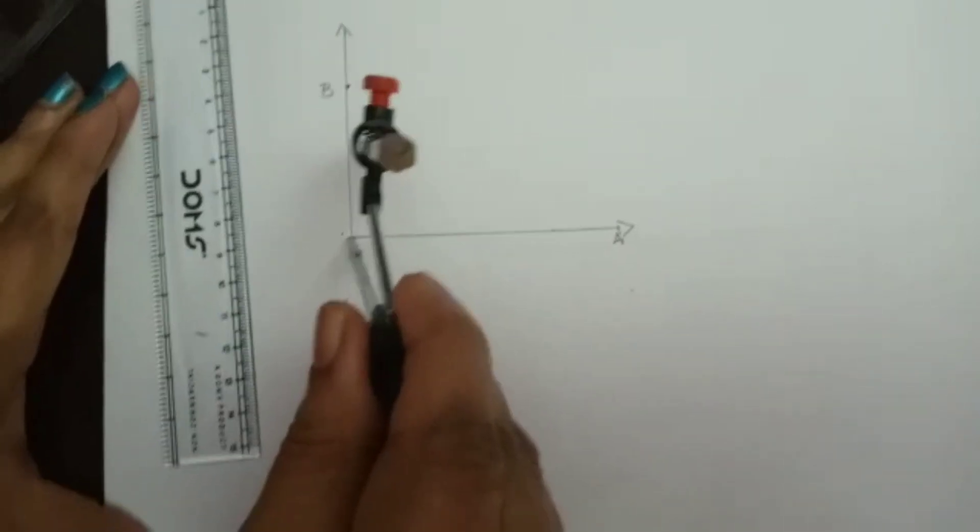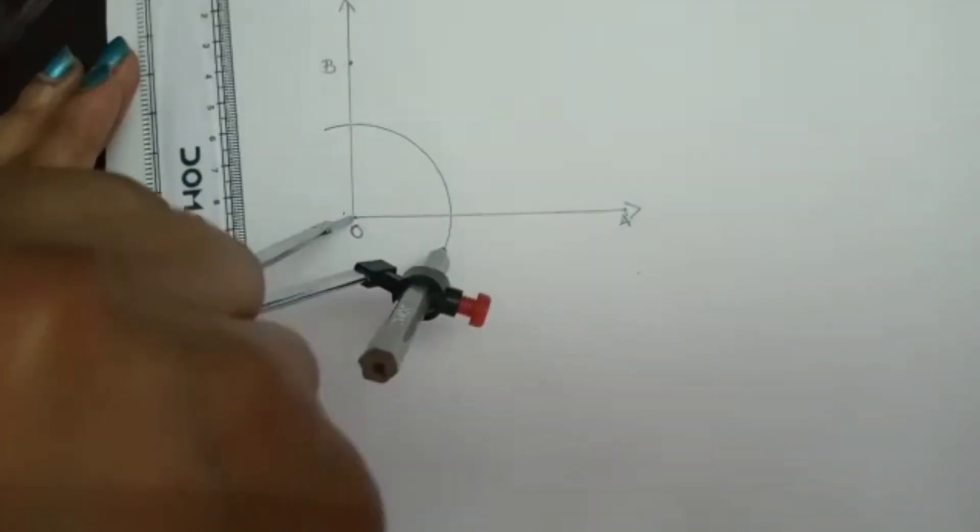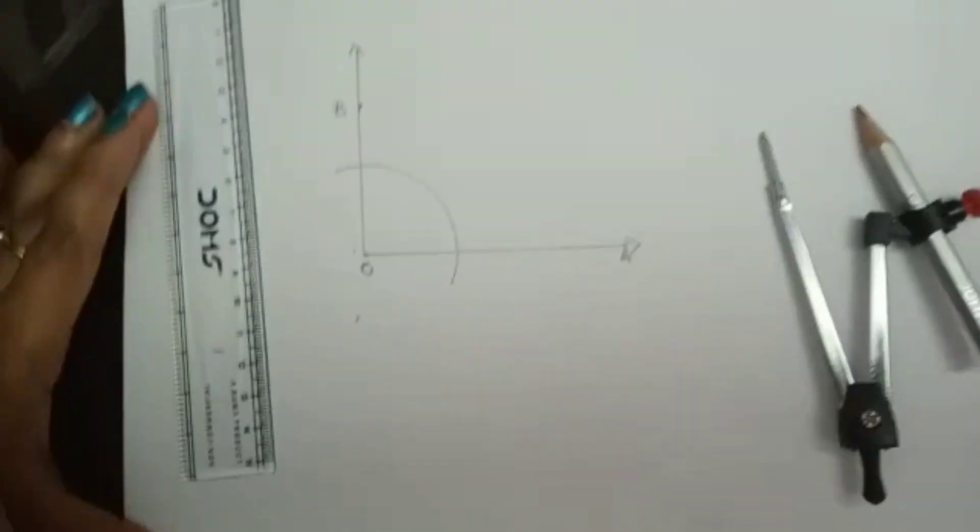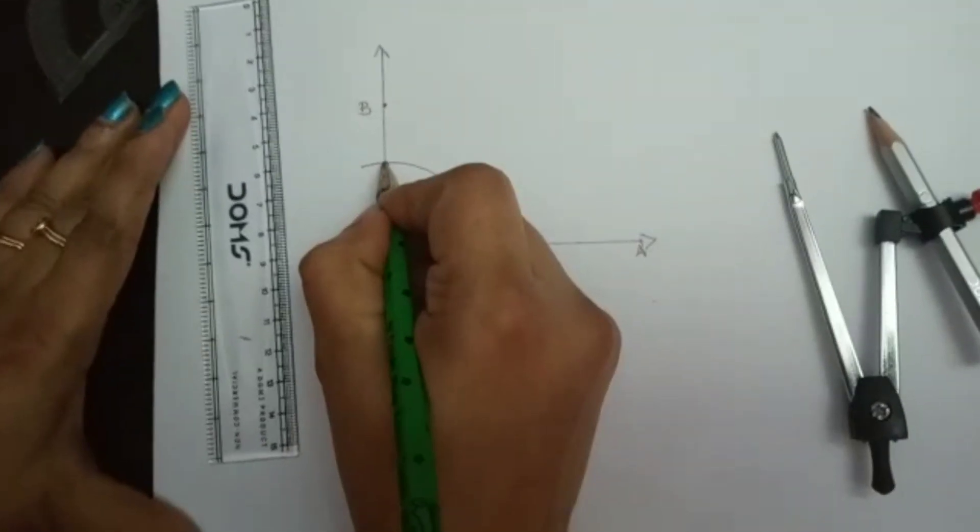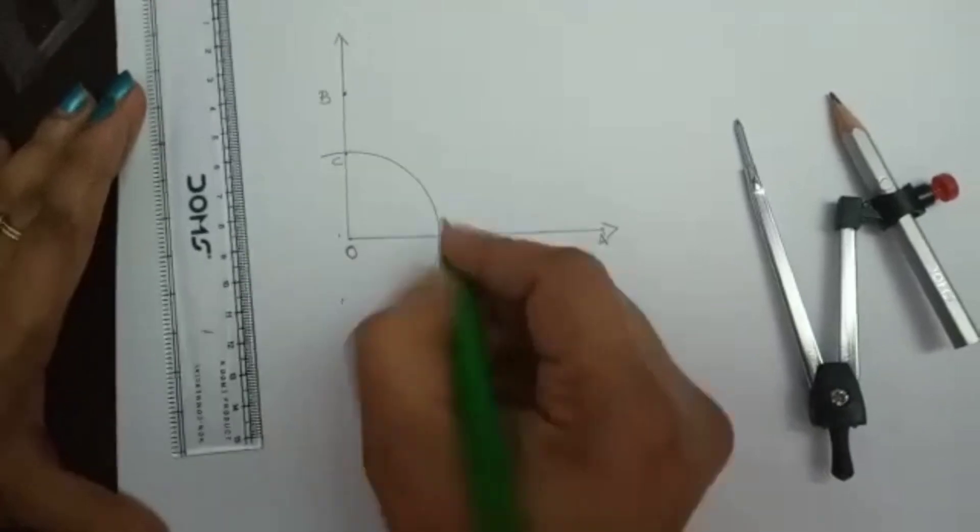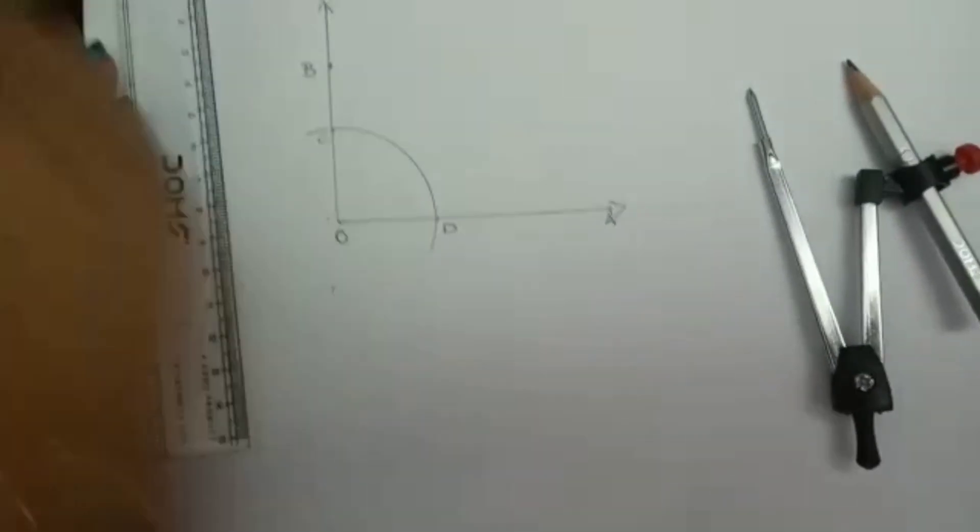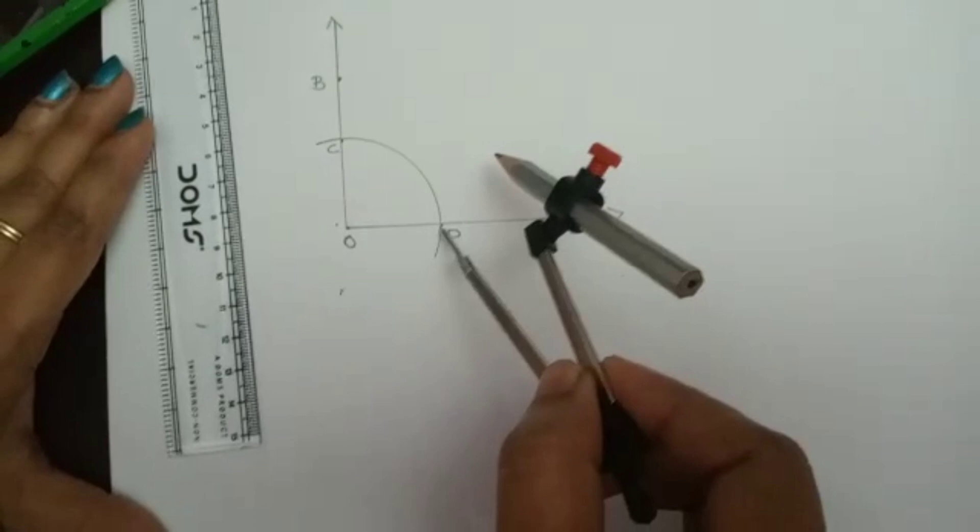I'm pointing on O. With O as center, draw an arc. Here we got two intersecting points. This point I'm marking as C and this is my point D.